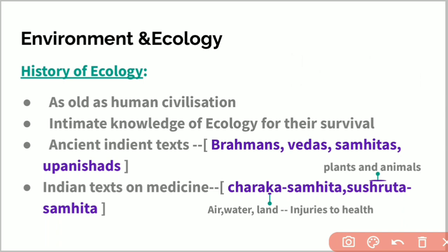There are detailed references in ancient Indian texts like Brahmanas, Vedas, Samhitas, and Upanishads about plants and animals. Indian texts on medicine like Charaka Samhita and Sushruta Samhita contain important information about air, water, and land.